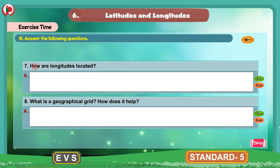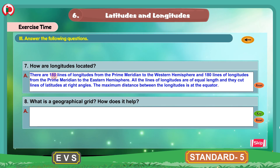Question 7: How are longitudes located? There are 180 lines of longitudes from the prime meridian to the western hemisphere and 180 lines of longitudes from the prime meridian to the eastern hemisphere. All the lines of longitudes are of equal length and they cut lines of latitudes at right angles. The maximum distance between the longitudes is at the equator.